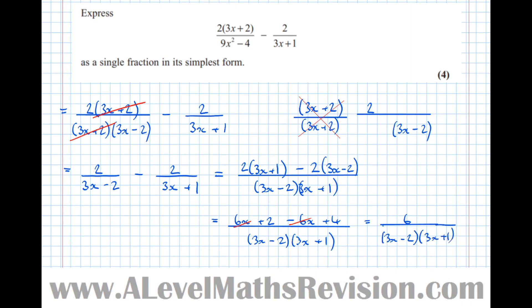So the answer is 6 over (3x minus 2)(3x plus 1). Don't multiply the denominators out — this is a really important point. Factorised is better.